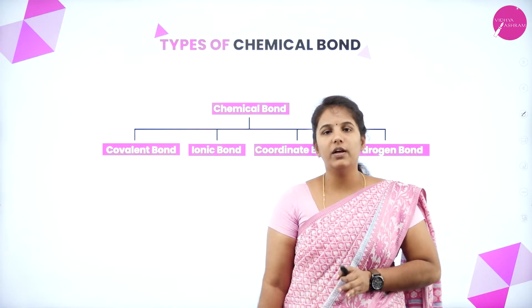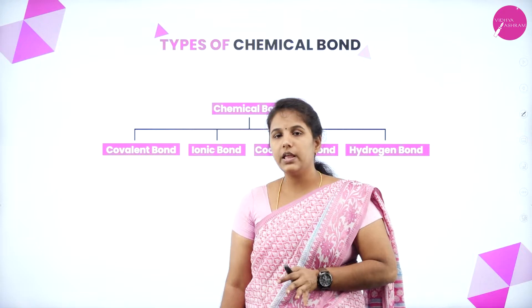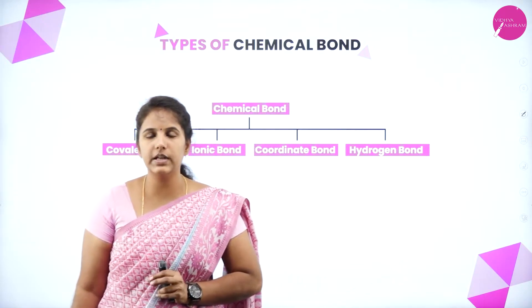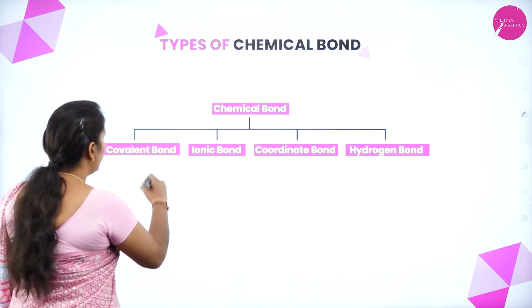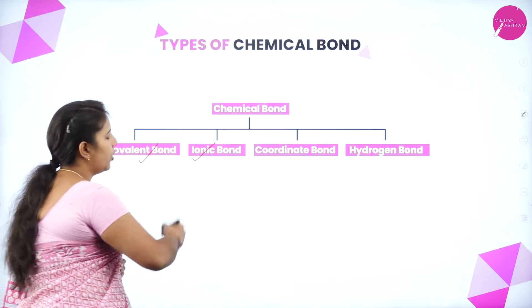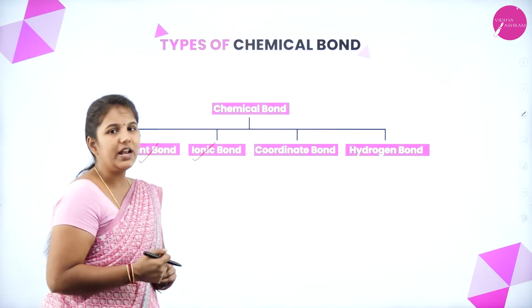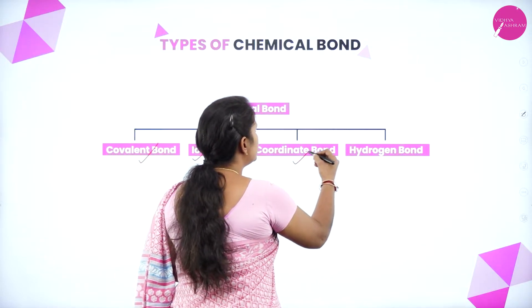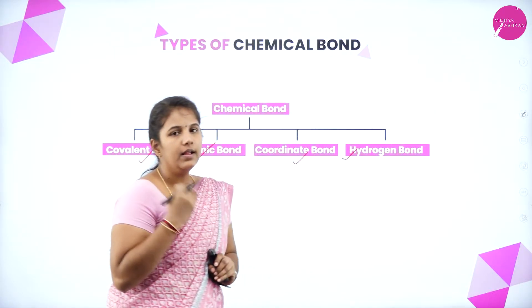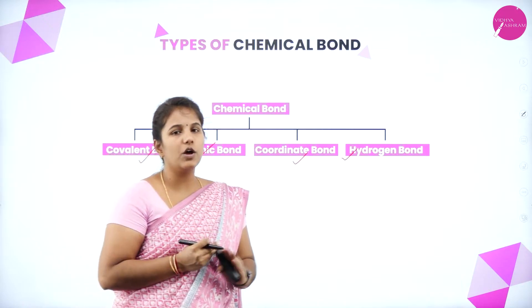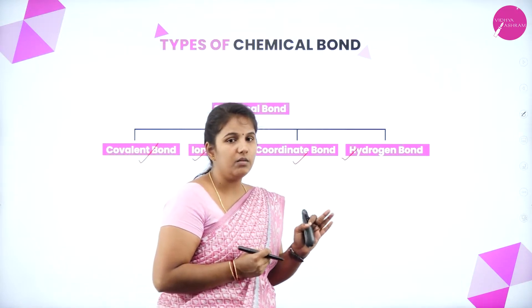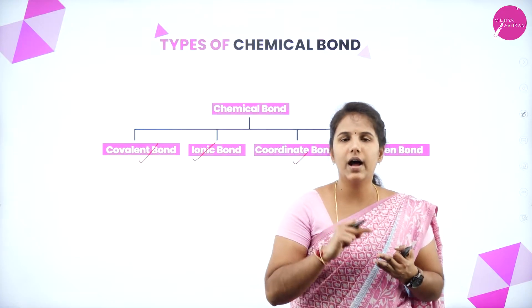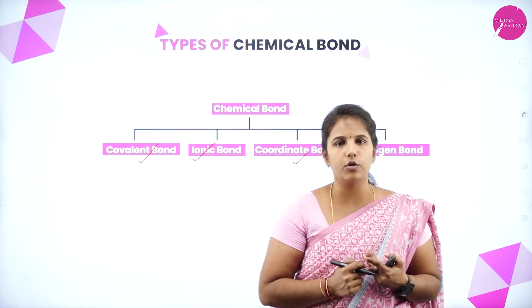Next, we will see the types of chemical bond. There are four different bonds: the first is covalent bond, then ionic bond, coordinate bond, and hydrogen bond. These are the four types of chemical bond.